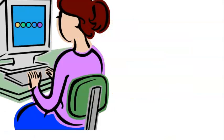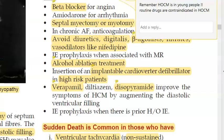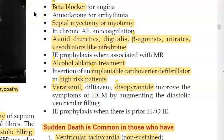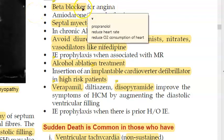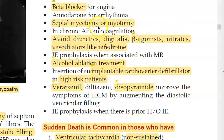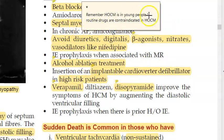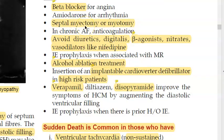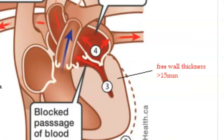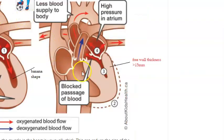Management of HOCM is different from other cardiac problems. Propranolol, a beta blocker, is used. To address the septal hypertrophy, alcohol septal ablation can be performed to reduce the excess muscle, or a septal myectomy or myotomy can be done to surgically remove the hypertrophied muscle.